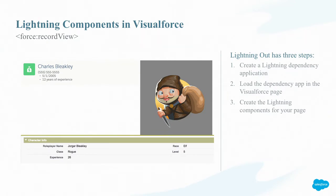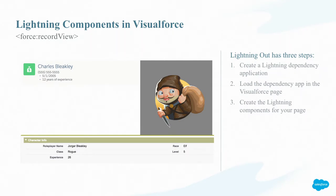The Lightning component I'm going to add is the force:recordView component. One of the Visualforce pages I was showing had a large white space in the upper left corner, and I thought it would be great to bring in the force:recordView component — which shows the mini layout for a record — and put it in that white space. The force:recordView is a new component from the Winter or Summer release this year, and you can add it to your pages using Lightning Out.